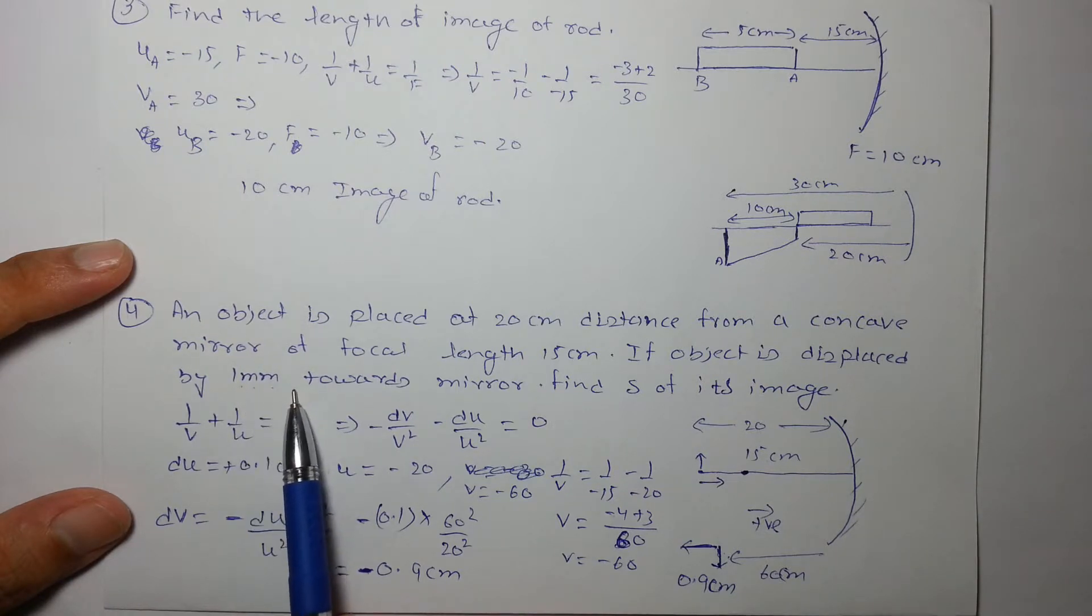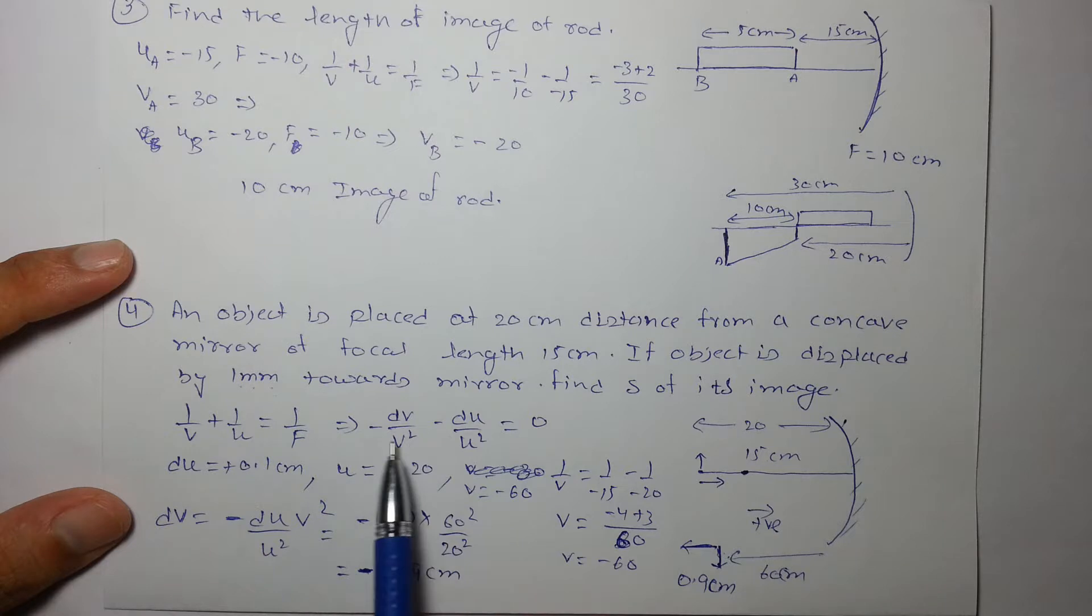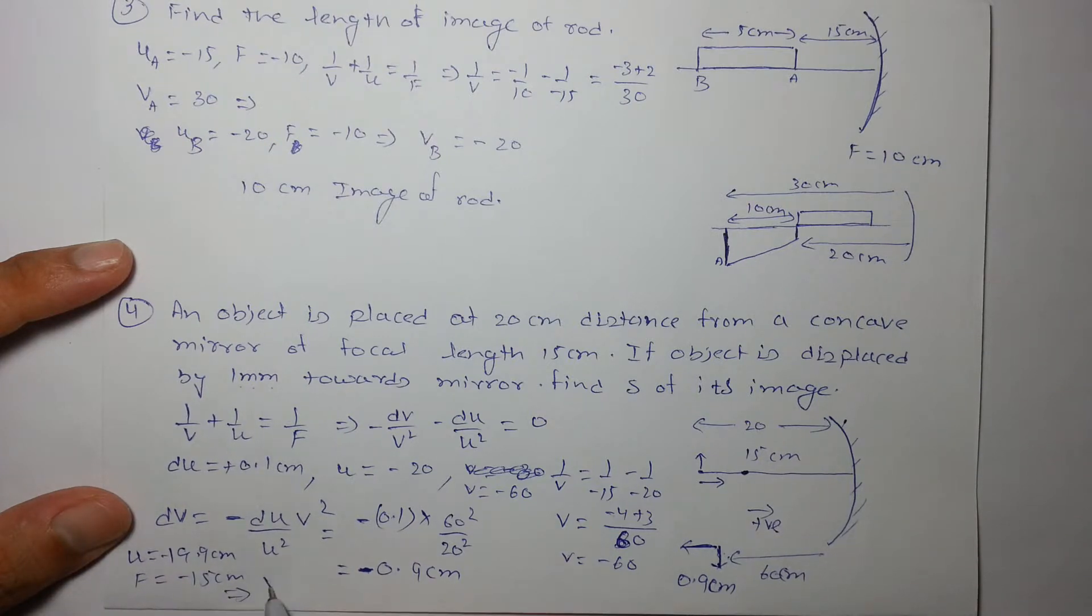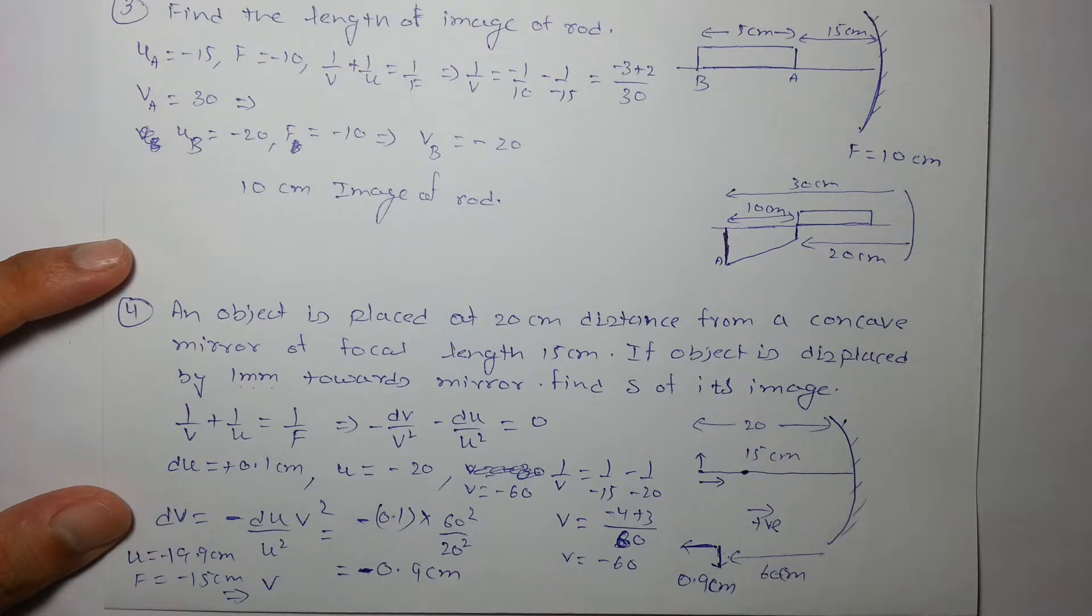But this expression should be applied only when the displacements are very small, 1 millimeter, 2 millimeter. Otherwise, go by the method: use u as 19.9 centimeter and f as minus 15 centimeter and calculate for v. Otherwise, if displacement is very large, you should go by the final position, focal length, and calculate v using mirror formula. For smaller displacement you can go by this.